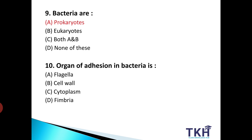Next, question number 10: organ of adhesion in bacteria is? पहले हमने discuss किया था organ of locomotion in bacteria — that is the flagella. अब organ of adhesion — जो किसी भी bacterial cell की कहीं भी attachment में help करता है — वो कौन सा organ है? Option A: Flagella. Option B: Cell wall. Option C: Cytoplasm. Option D: Fimbriae. तो हमारा answer है Option D: Fimbriae और Pili. हम Fimbriae को Pili भी कहते हैं, तो अगर Pili option में आए तो उसे भी choose कर सकते हैं। Organ of adhesion is Fimbriae/Pili, and organ of locomotion is flagella.